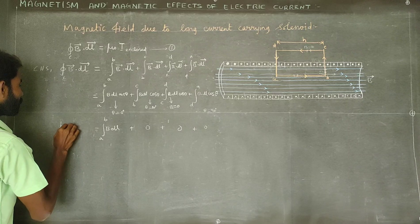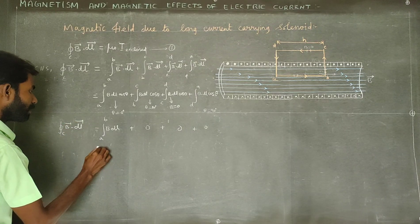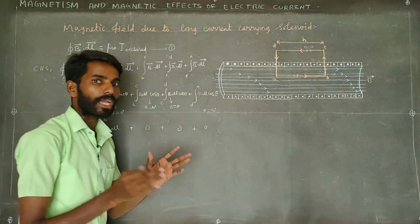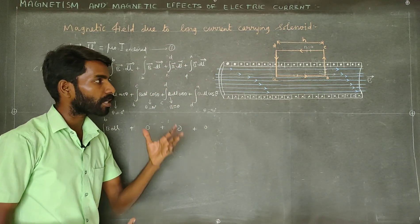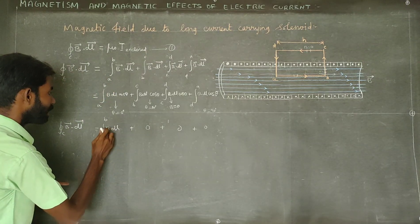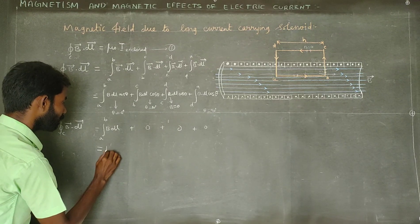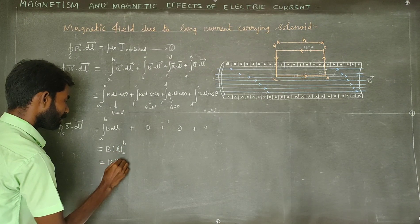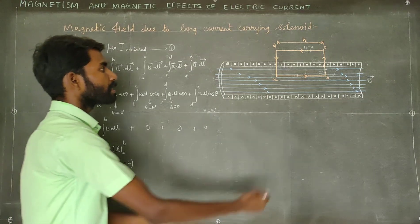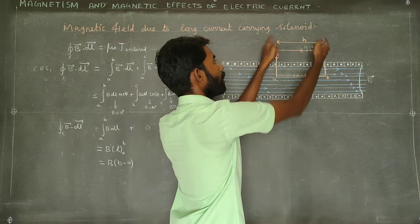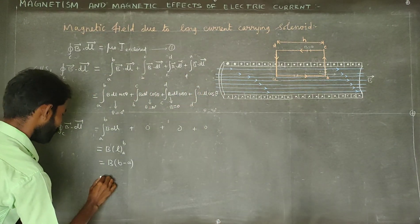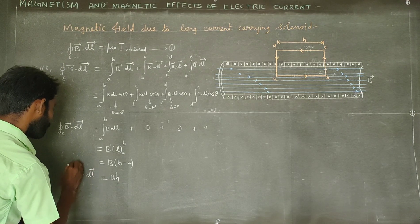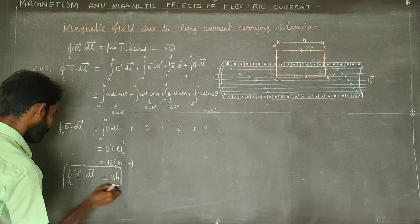So the closed integral of B-vector dot dL-vector reduces to only the AB term. The magnetic field is uniform and constant inside the solenoid, so B can be taken out of the integral. Integrating dL from A to B gives the length h, so the left-hand side equals B times h.